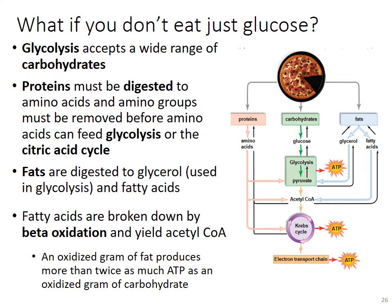We don't eat just glucose — cellular respiration handles other macromolecules too. Glycolysis accepts a wide range of carbohydrates. Proteins are digested to amino acids, and the amino groups are removed before they can feed into glycolysis or the citric acid cycle. Fats are digested to glycerol — usable in glycolysis — and fatty acids, which are broken down by beta oxidation to produce acetyl coenzyme A, which feeds into the citric acid cycle. Importantly, an oxidized gram of fat produces more than twice as much ATP as an oxidized gram of carbohydrate.